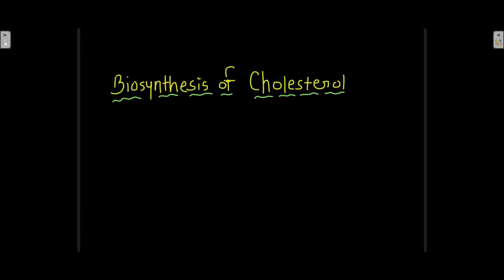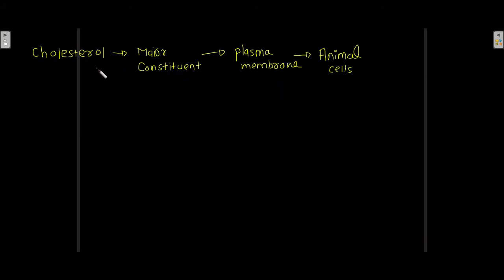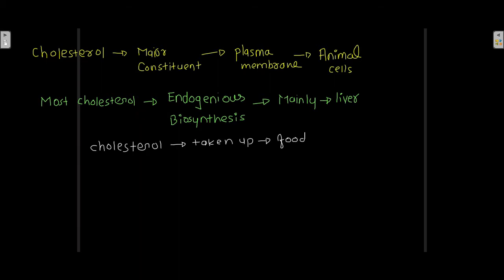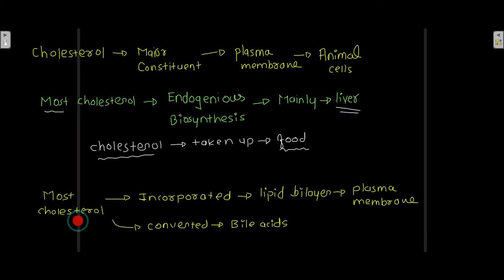Cholesterol is a major constituent of the plasma membrane in animal cells. Most of the cholesterol derives from endogenous biosynthesis, which mainly takes place in the liver. Cholesterol is also taken up from food, but most of the cholesterol is synthesized by the liver.